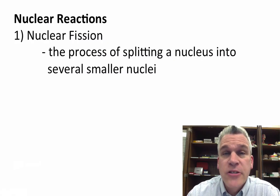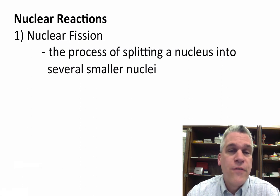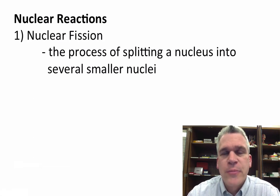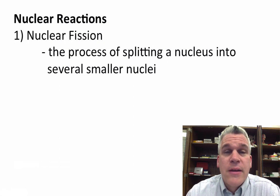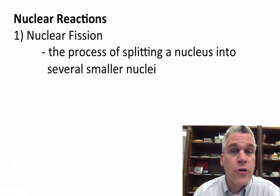There are two types of nuclear reactions that we're going to be looking at today: nuclear fission and nuclear fusion. We're going to start with fission because that's what we see taking place in things like nuclear power plants. It is the process of splitting a nucleus into several smaller nuclei.